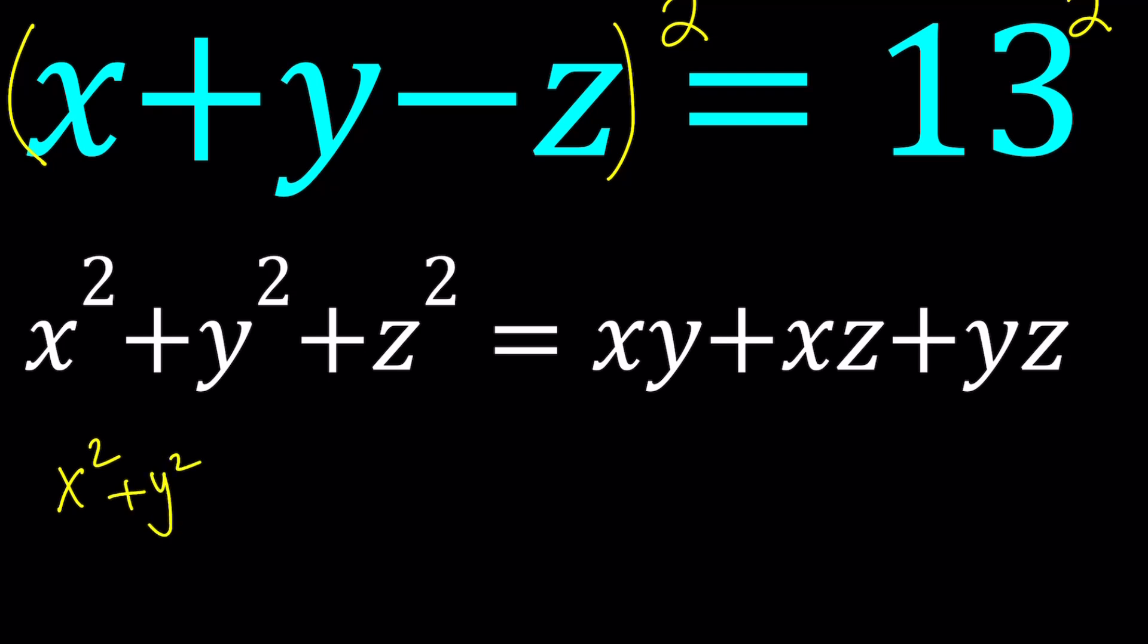x squared plus y squared plus z squared. And then, I'm going to be getting something like plus 2xy, and then minus 2xz, because z has a minus sign, minus 2yz. And that will equal 169, which is 13 squared.